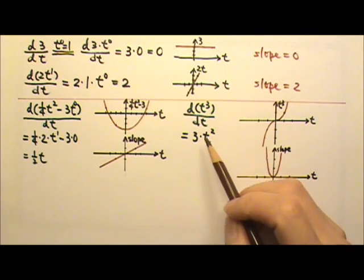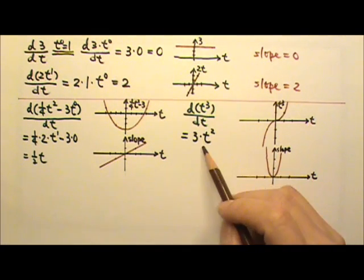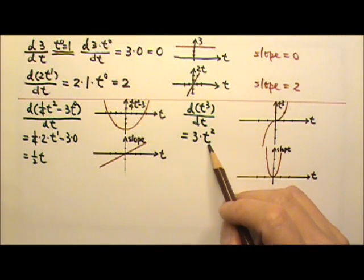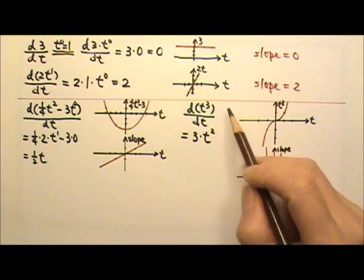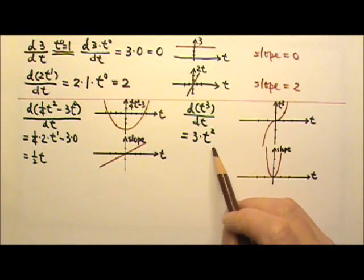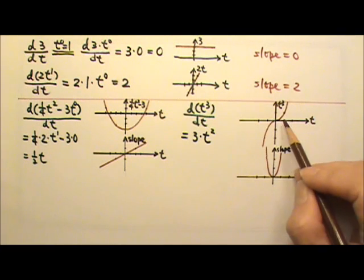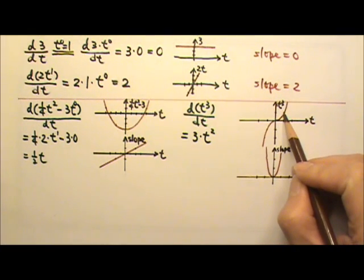So the derivative of an equation is the slope for its graph. When we take the derivative, we get the equation for the slope of the graph.